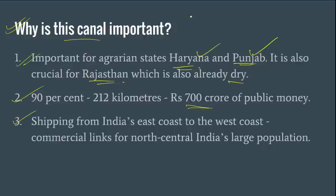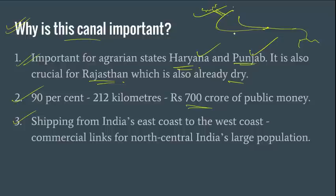Now you have Satluj, you have Yamuna, and then you have the Ganga. Yamuna meets Ganga at Allahabad, and Ganga flows into the Bay of Bengal. By connecting Satluj with Yamuna, you are basically connecting the easternmost and westernmost rivers of this region with a river channel, which will be good for riverine transportation.